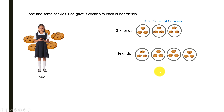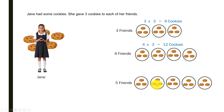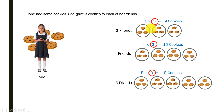If Jane had four friends, we have four circles each containing three cookies, so she gives away four times three — twelve cookies. If Jane had five friends, five circles with three cookies each gives five times three, which is fifteen cookies. What is common across all three cases is the number of cookies she gives out, and what varies is the number of friends. Let's see how we can use a single model to represent this.